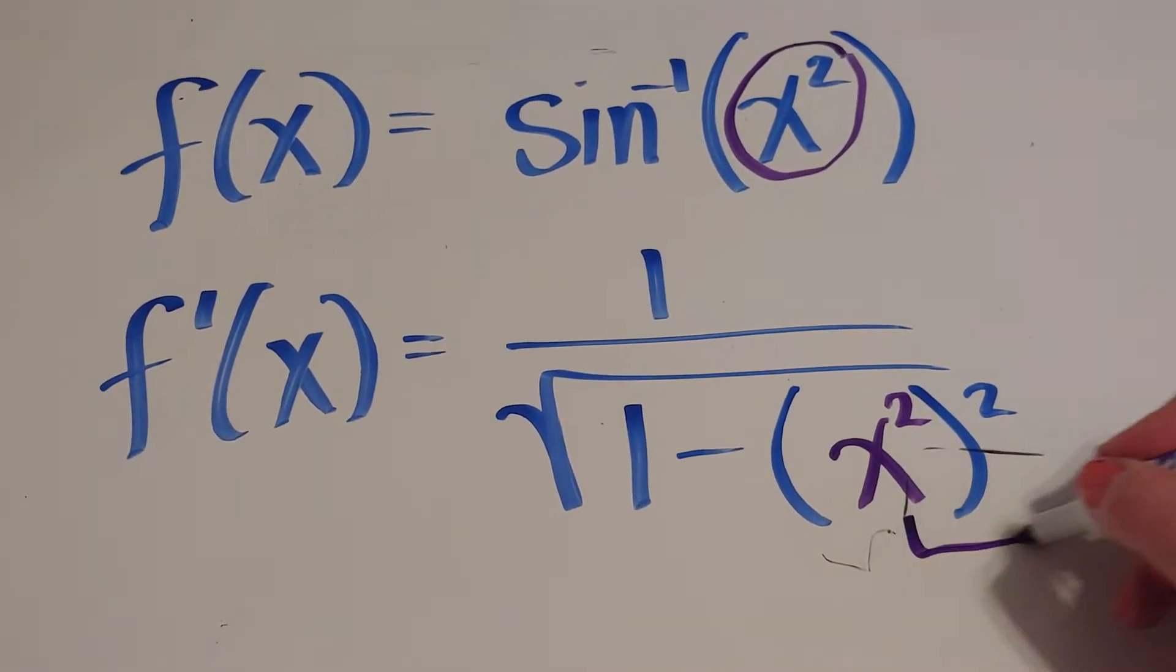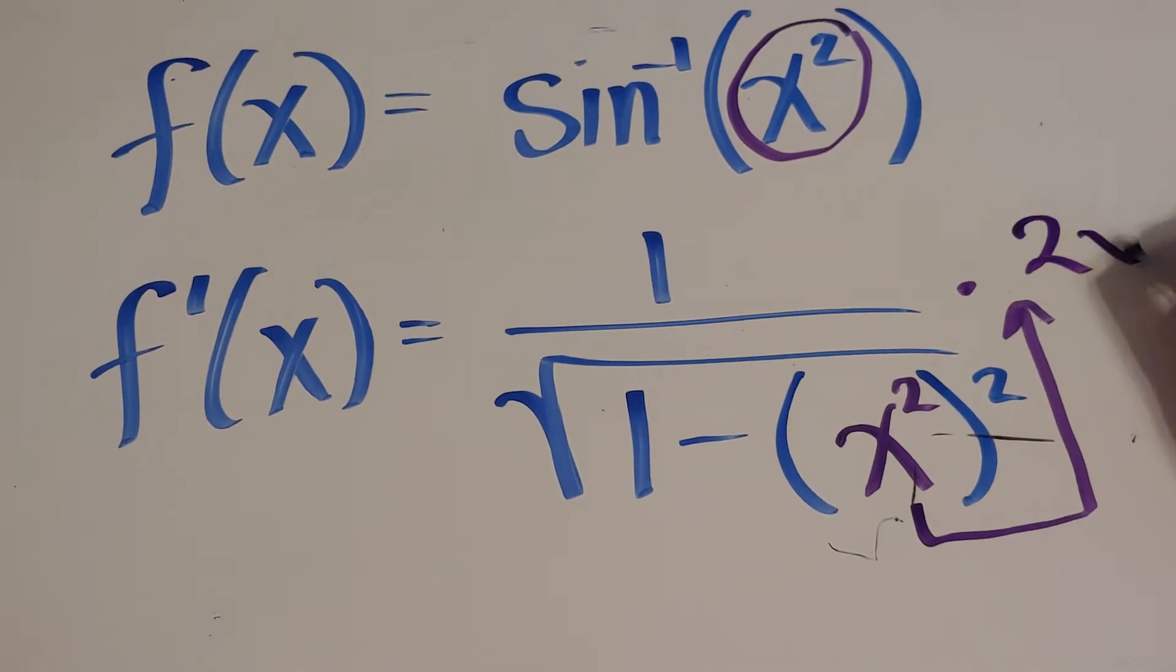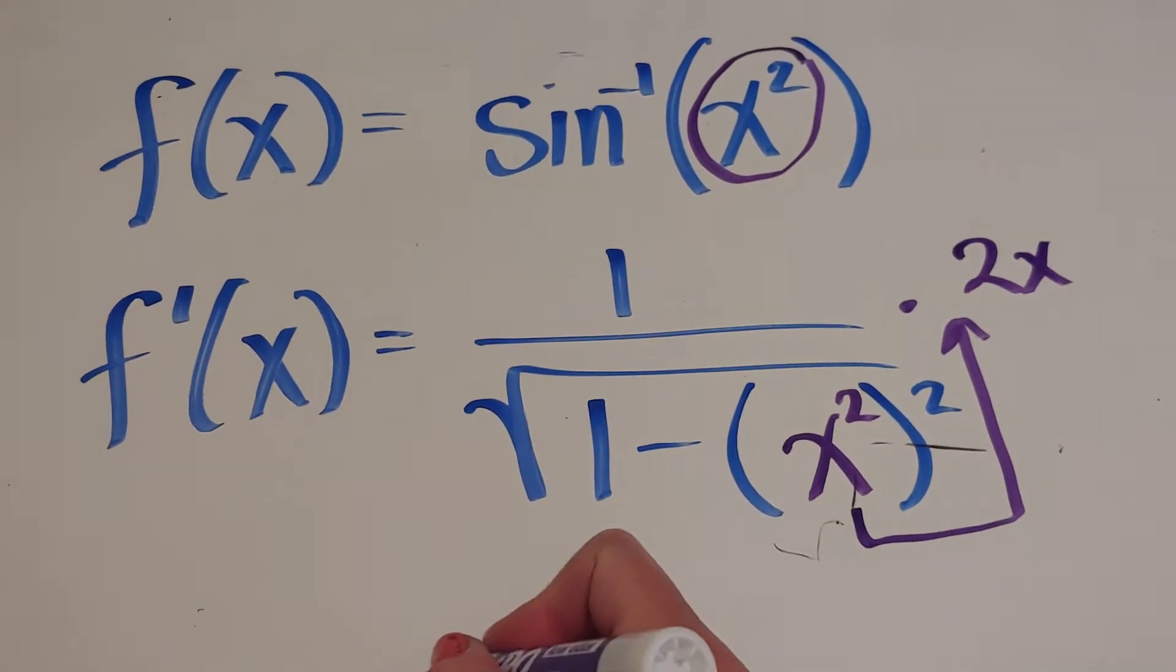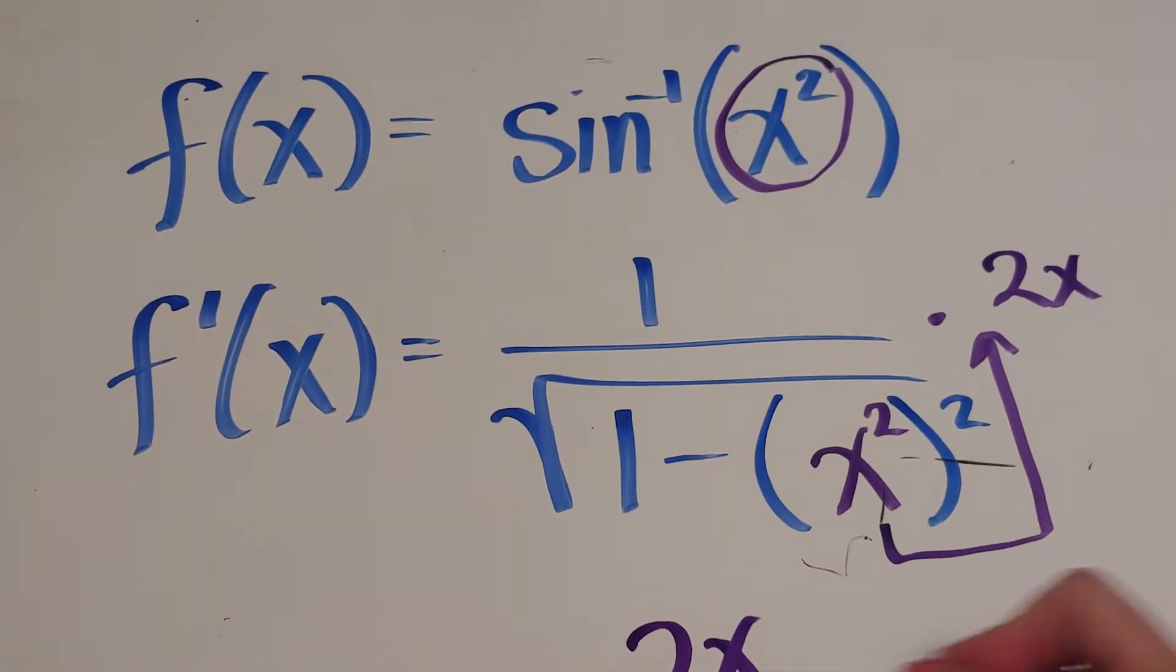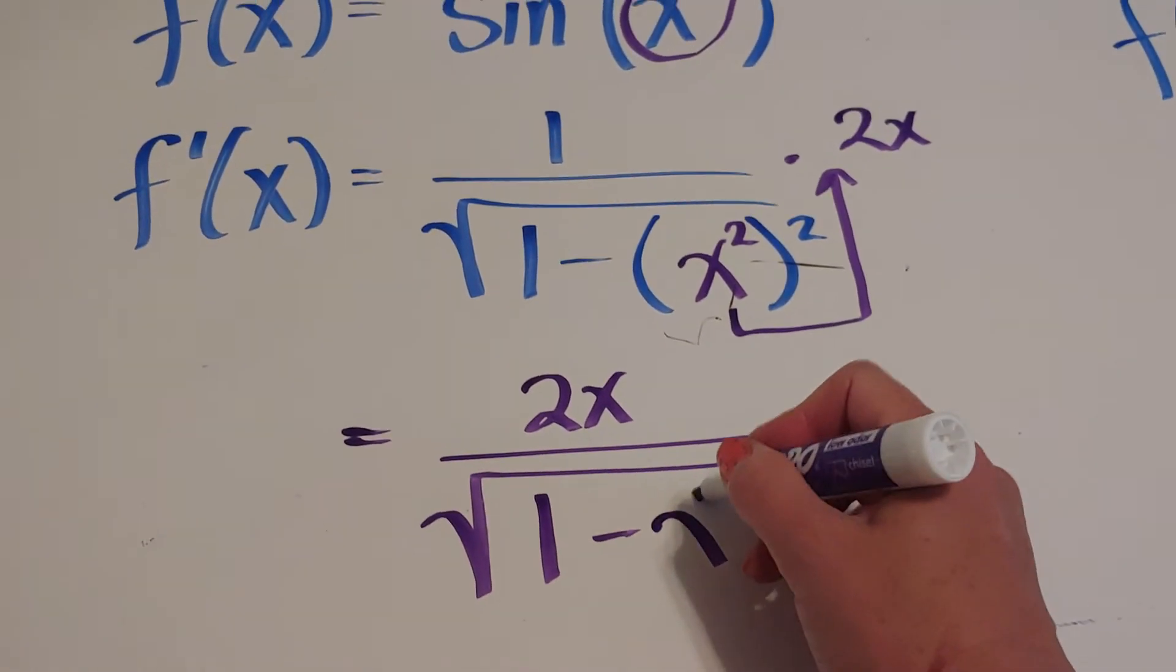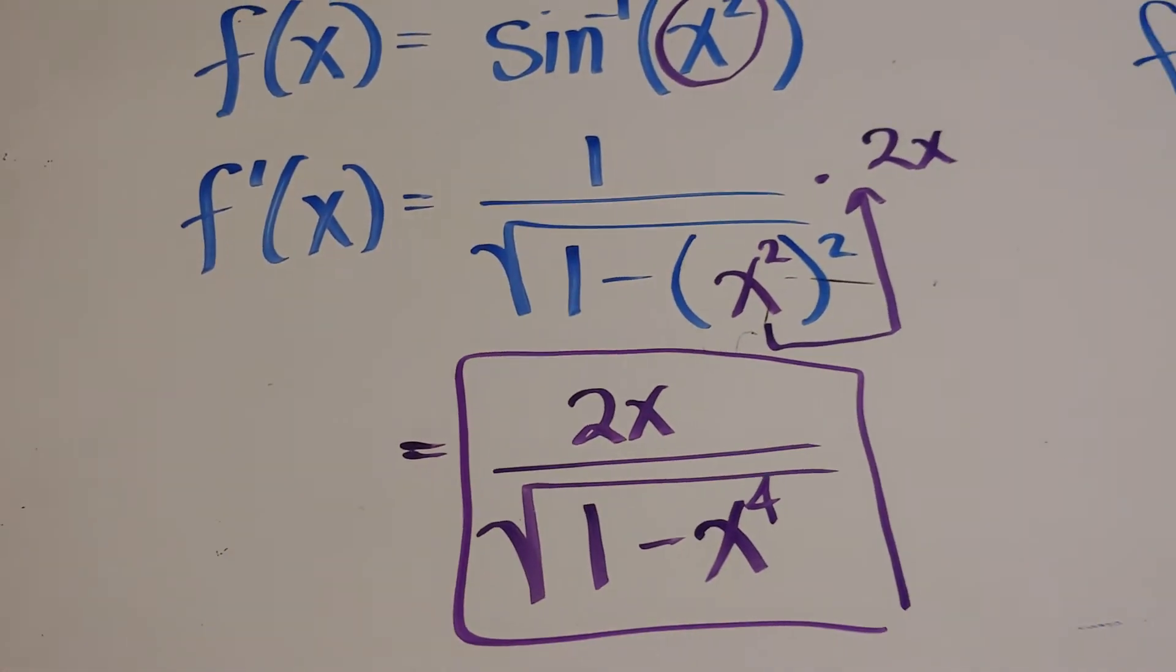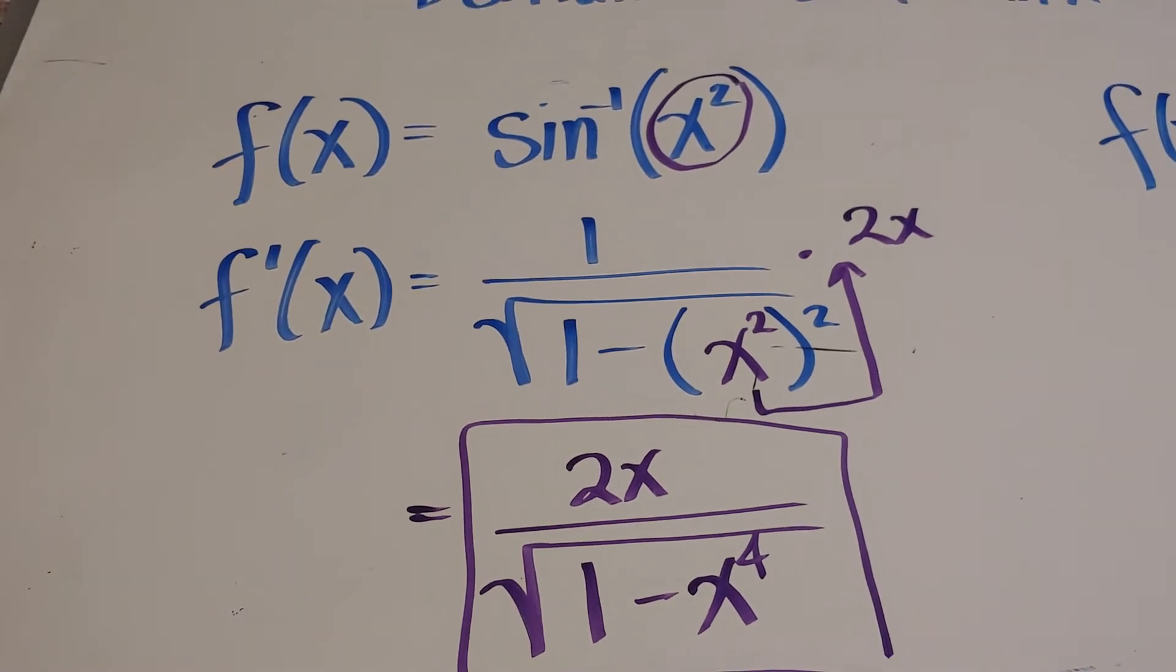Now, by chain rule, I have to multiply by the derivative of x squared, which is 2x. I'm just going to clean it up just a little bit. So there will be a 2x on top. And this will be the square root of 1 minus x squared squared, which is x to the fourth. So, there is my derivative of sine inverse of x squared. Let's practice another one.